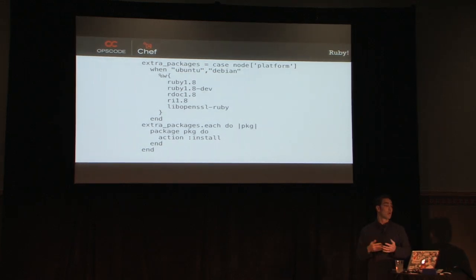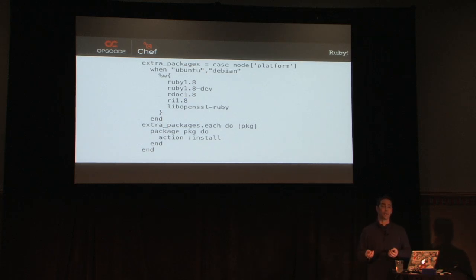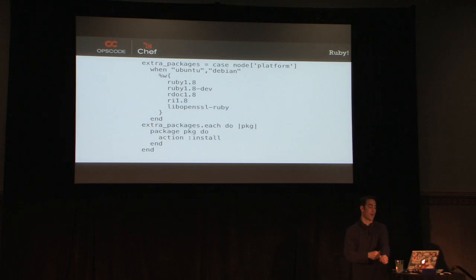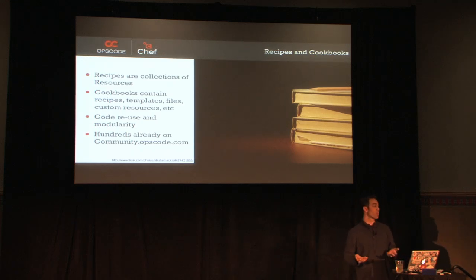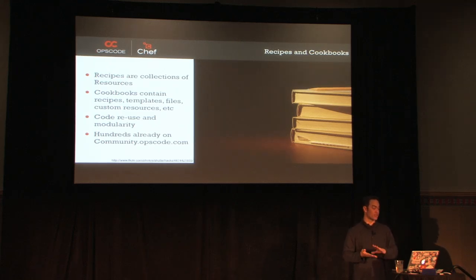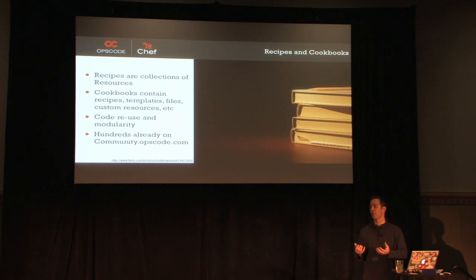Chef is written in Ruby. The recipes that we write are written in Ruby because it's a nice third-generation language. It allows you the ability to interact with other libraries, to calculate things dynamically, to do things you do with programming languages, and extend it if necessary. When you write these recipes, you put them in a cookbook. A cookbook is just a way of sharing infrastructure — it's got the recipes, templates, custom resources, whatever you need.